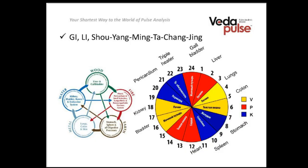In the Wuxing system, or system of elements, the large intestine channel refers to the metal element. It is connected to the lungs — lungs is a yin organ and large intestine is a yang organ. In the Ayurvedic system, both the large intestine channel and lungs channel belong to the Vata category.